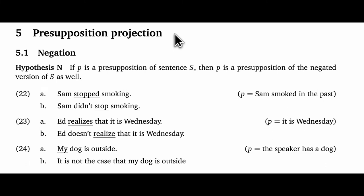That provides a nice transition into our core tests for presuppositions, which I've placed under the heading of presupposition projection — that's how these tests are often described in the literature. The guiding metaphor is that presuppositions expressed syntactically in embedded positions tend to project up through the entire sentence to become presuppositions of the entire sentence, even where we might expect semantic operators to target them and change them. The negation test is perhaps the clearest instance of this surprising behavior. Our core hypothesis is Hypothesis N: if proposition P is a presupposition of sentence S, then P is a presupposition of the negated version of S as well.